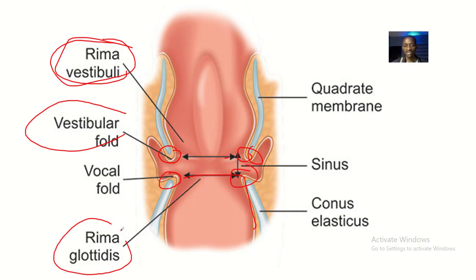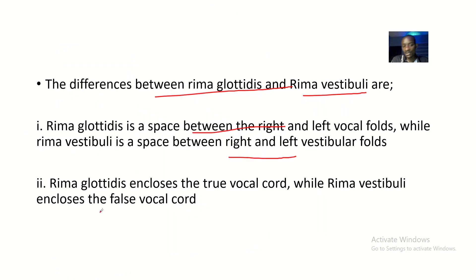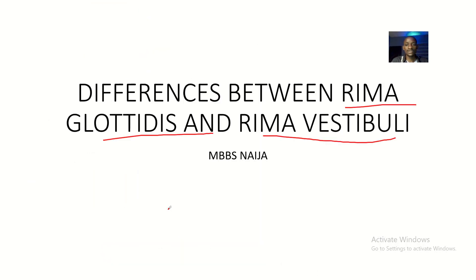As mentioned in my video on differences between true and false vocal cords, the true vocal cords are used for sound making, while the vestibular folds are just for support. So the second difference: rima glottidis is related to the true vocal cords, while rima vestibuli is related to the false vocal cords.